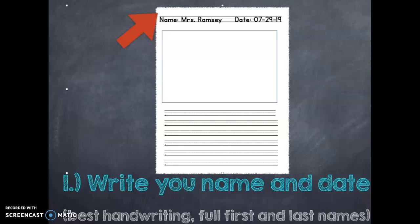Step one is to write your name and the date. When you do this, you want to make sure you're using your best handwriting. You want to include your first name and your last name, and you want to make sure you have the date at the top.